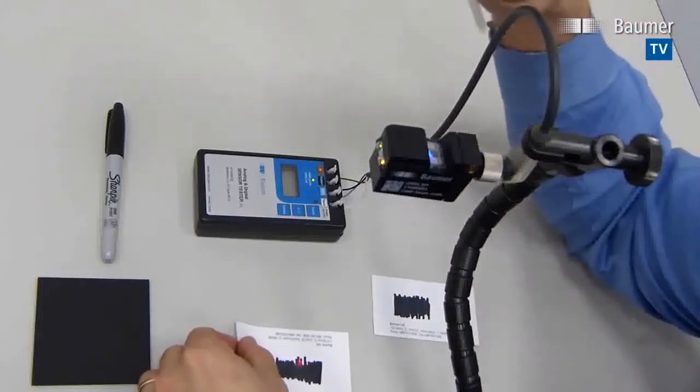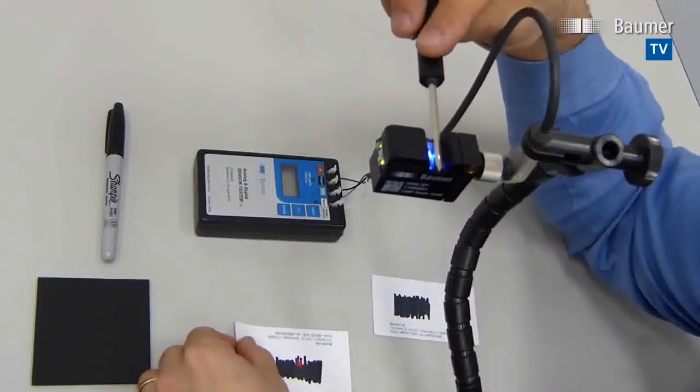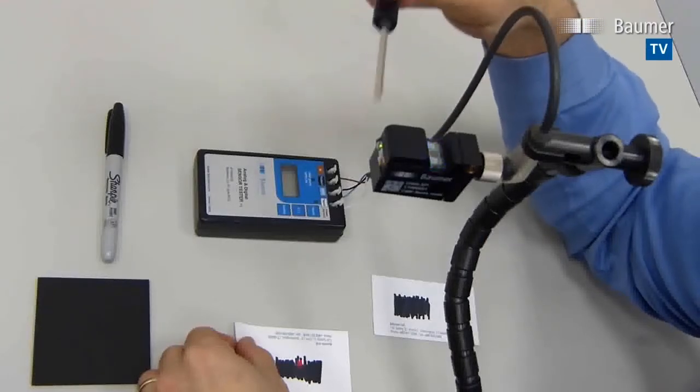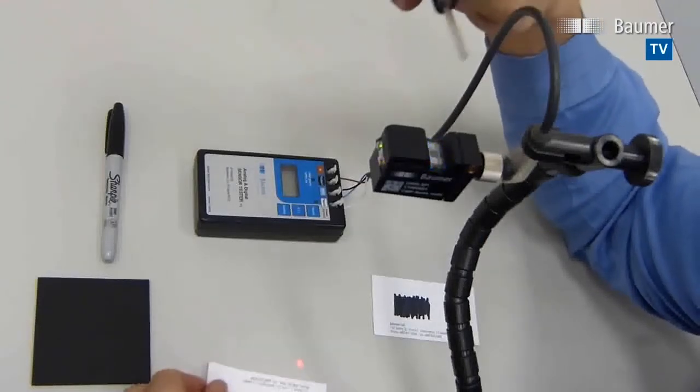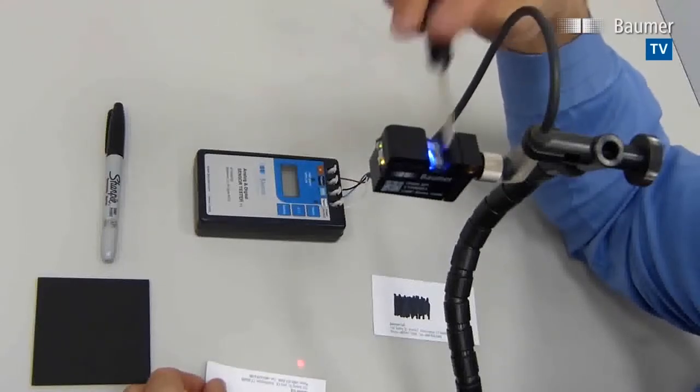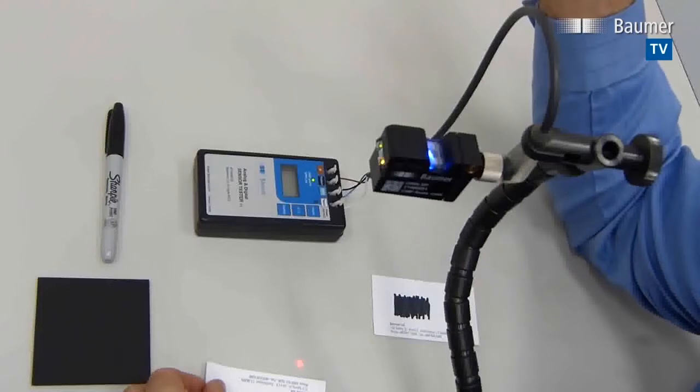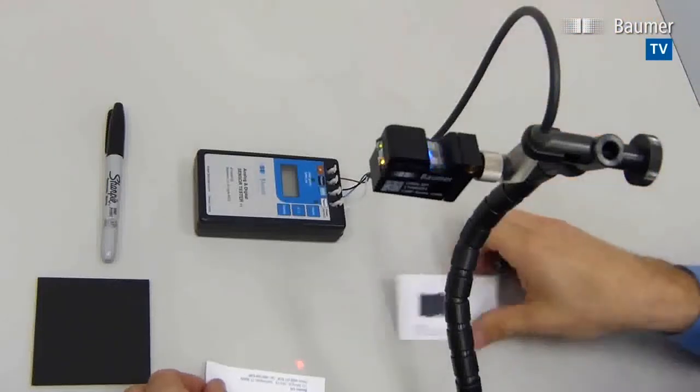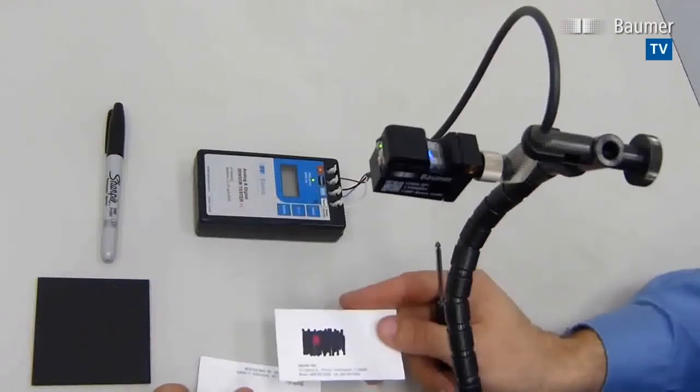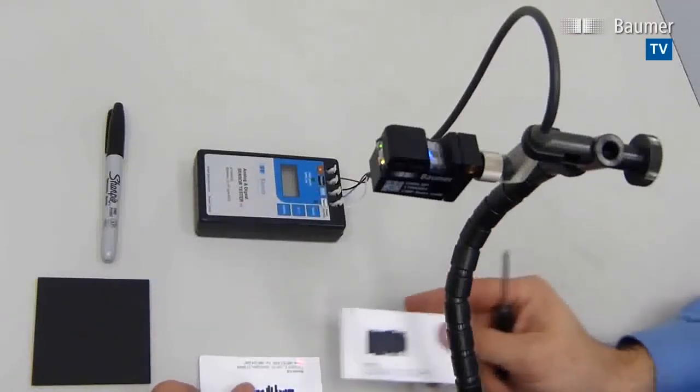We can change that mode by the way we teach it. Again, we enter teach mode by holding the QTeach function until these begin to flash. And then we show the sensor the background. And within four seconds, we show the background again. And now, the sensor will give that green PNP output when the beam is blocked.